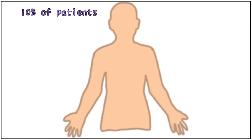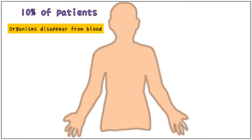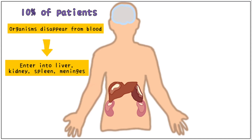In the remaining 10% of patients, the organisms disappear from the blood and enter the liver, kidney, and spleen and meninges.